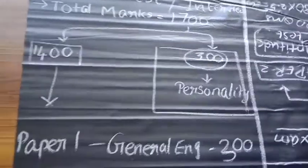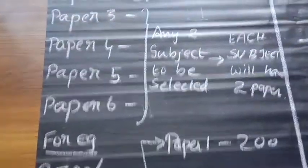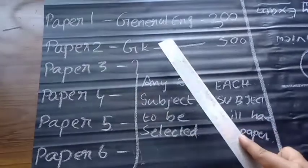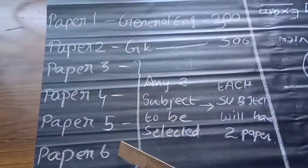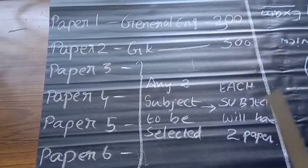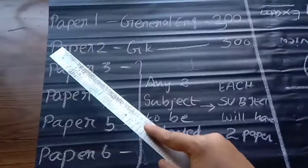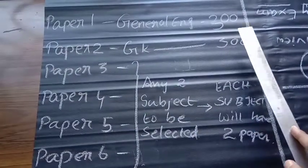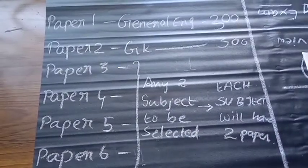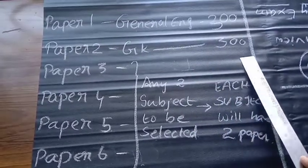Now we will see about the written examination. IFS written examination has totally 6 papers. Paper number 1 is General English. All 6 papers are written type, meaning you need to write paragraphs. You should have a keen eye on your handwriting whether you can write correctly. The first paper is General English and it will carry 300 marks.